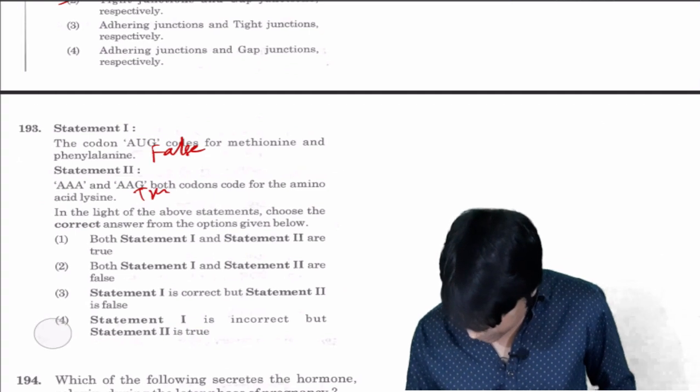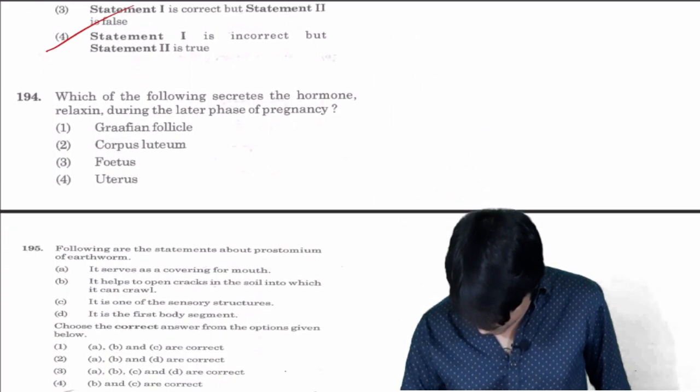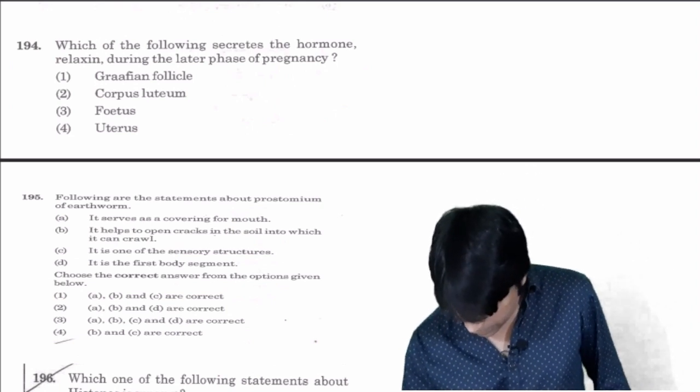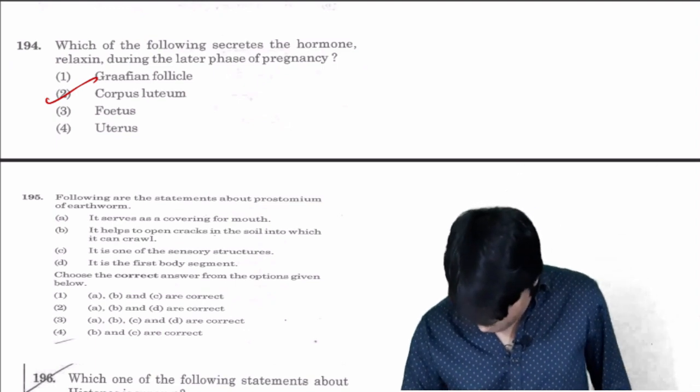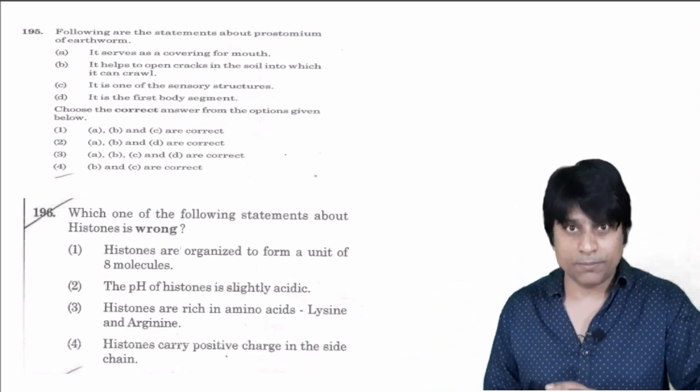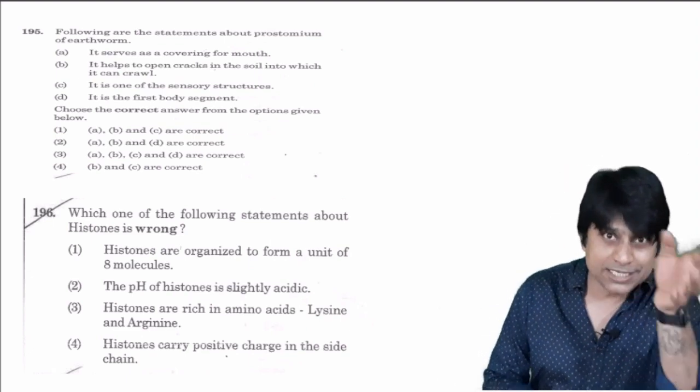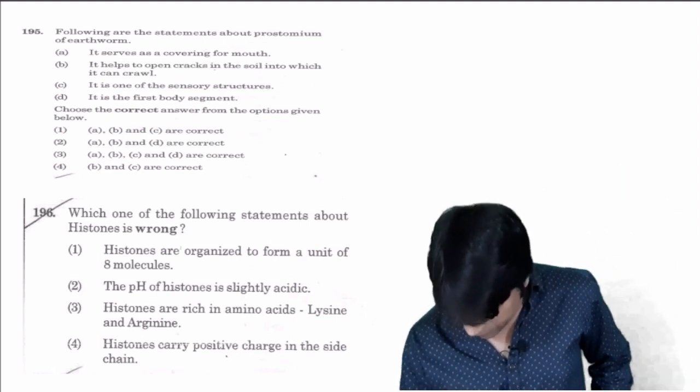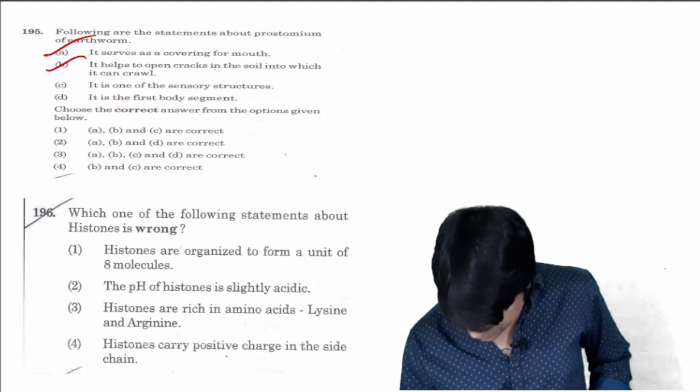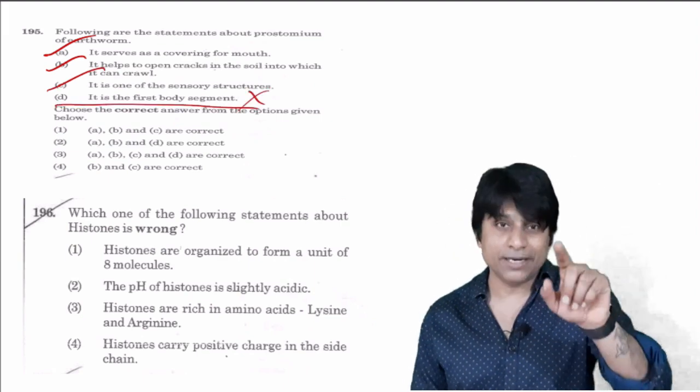Which of the following secretes hormone relaxin? Relaxin is produced from corpus luteum, the answer is two. Following are the statements about the prostomium. Peristomium is the first segment, prostomium is the pseudo segment which overhangs the mouth. It serves as covering for the mouth, correct. It helps to open cracks in the soil into which it can crawl, correct. It has sensory structures, correct. It's the first body segment, wrong. Peristomium is the first body segment. Except D, remaining all statements are correct. A, B and C are correct.